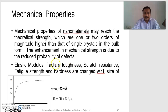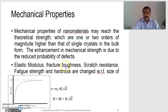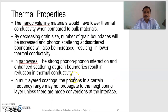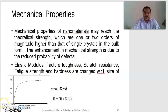Young's modulus will be decreased and hardness will be increased. Here, the grain size of the material is decreased to nanoscale range, that is from 1 nanometer to 100 nanometer range. Elastic modulus, fracture toughness, scratch resistance, fatigue strength, and hardness are changed with respect to the size of the material or grain size of the materials. By decreasing the grain size into nanoscale range, the Young's modulus is decreased.